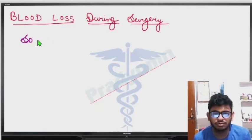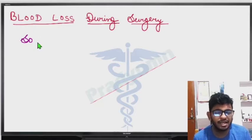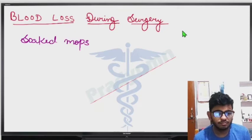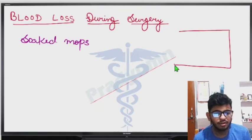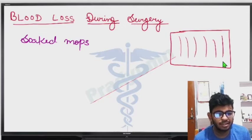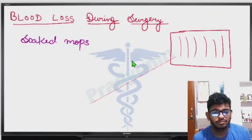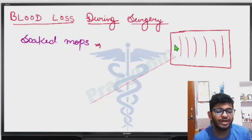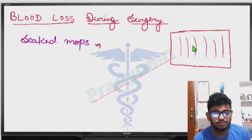There are soaked mops which we use to estimate blood loss. We estimate that a single large piece of soaked mop contains 100 cc of blood.